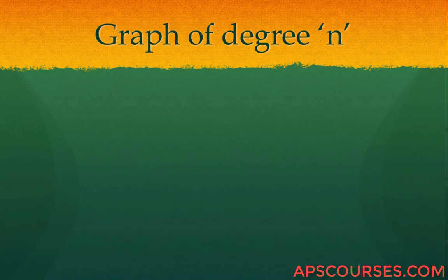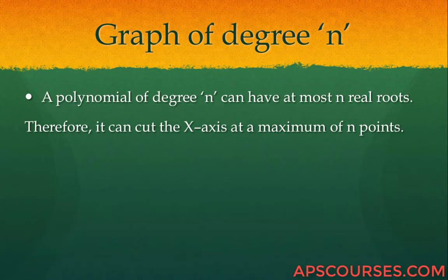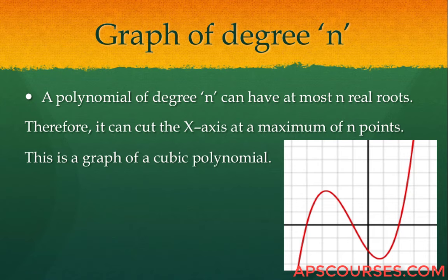Graph of degree n: a polynomial of degree n can have at most n real roots. Hence it can cut the x-axis at a maximum of n points. For example, this is the graph of a cubic polynomial — it cuts the x-axis at 3 points, and it can never cut the x-axis at more than 3 points.